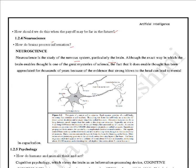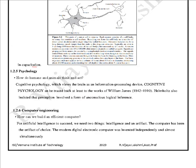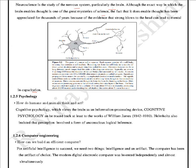Although the exact way in which the brain enables thought is one of the great mysteries of science, it has been appreciated for thousands of years — evidenced by the fact that strong blows to the head can lead to mental incapacitation. Neurons have synapses where one neuron can communicate with another, and dendrites pass information from one neuron to another. We will discuss neurons again in the fifth module.